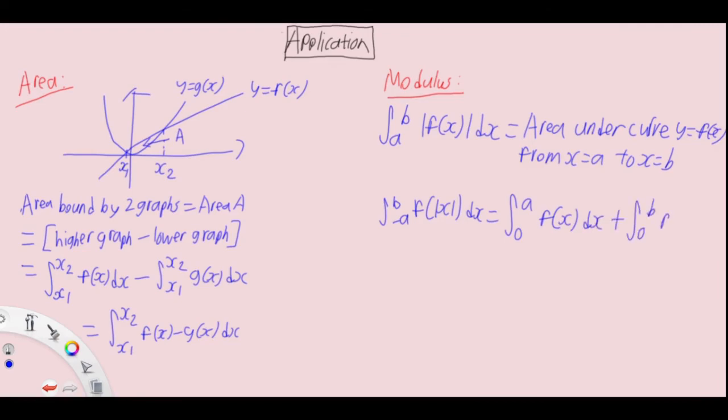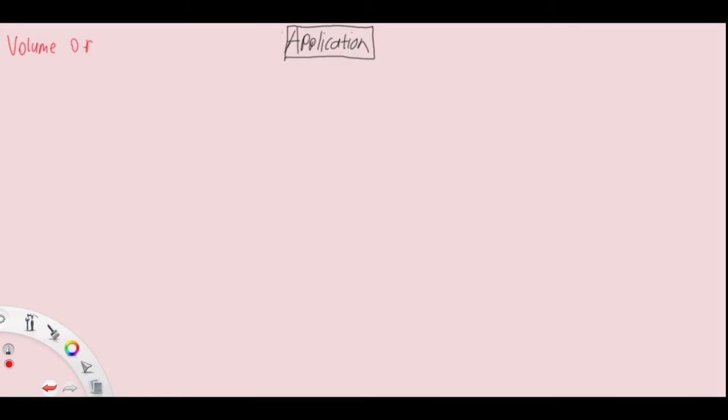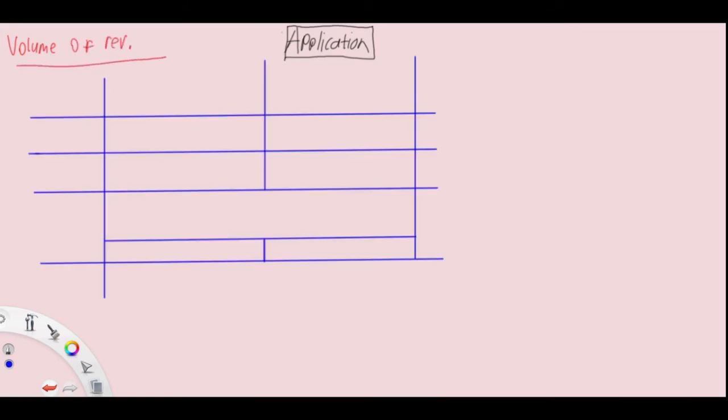For f(|x|) integrated from -a to b where a and b are positive, it's the positive input from 0 to a and 0 to b. Our final application is volume of revolution.